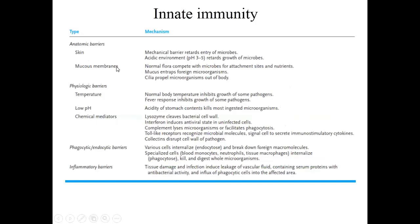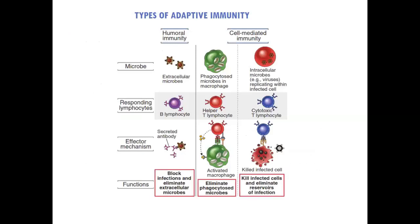Innate immunity has different barriers: anatomic barriers, physiological barriers, chemical barriers, phagocytic barriers, and inflammatory barriers — all important to protect us from infectious disease. There are two types of adaptive immunity: humoral immunity and cell-mediated immunity. In humoral immunity, B cells secrete antibodies whose effector functions block infection and eliminate extracellular microbes. T lymphocytes augment phagocytosis by macrophages, help eliminate phagocytosed microbes, kill infected cells, and eliminate reservoirs of infection.